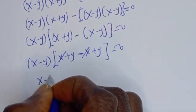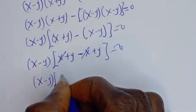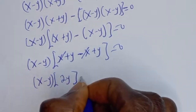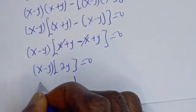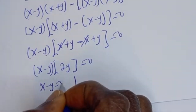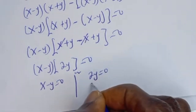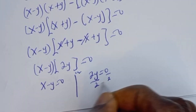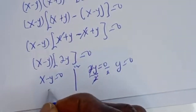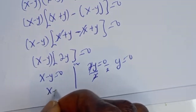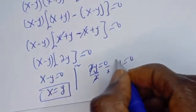X minus Y is common, so factoring it out: X minus Y bracket, and the remaining terms simplify to 2Y, equals 0. There are two cases: X minus Y equals 0, giving X equals Y; or 2Y equals 0, and dividing by 2 gives Y equals 0. Both answers match Method 1.